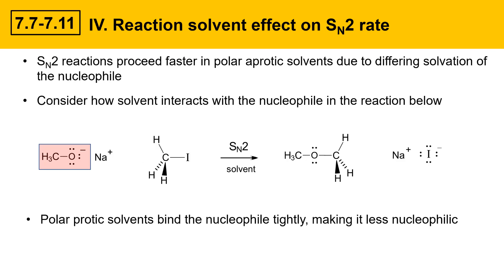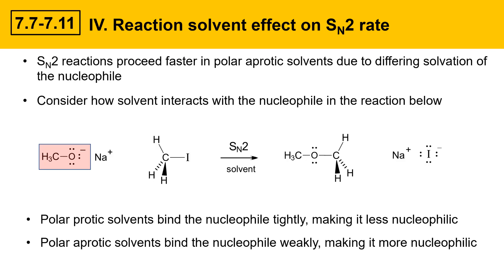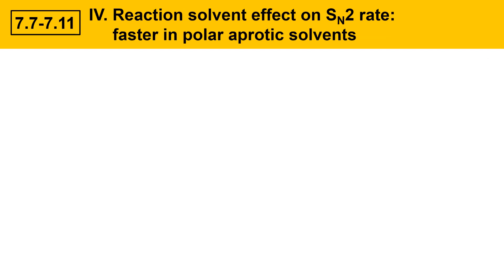It turns out that polar aprotic solvents bind the nucleophile tightly and make it less nucleophilic, while polar aprotic solvents bind the nucleophile weakly and allow it to be more nucleophilic. SN2 reactions proceed faster in polar aprotic solvents. This slide will try to explain why. There's strong solvation that occurs of the nucleophile in a polar aprotic solvent.